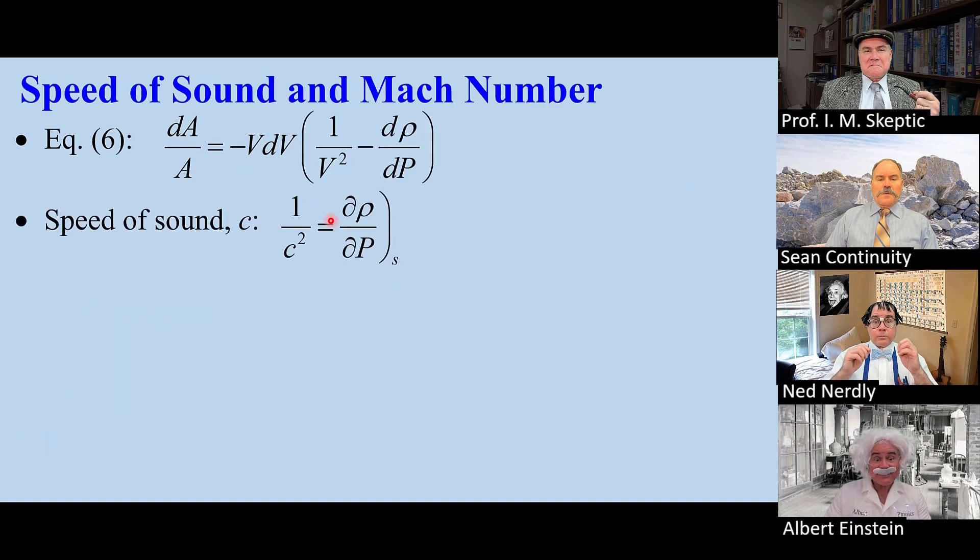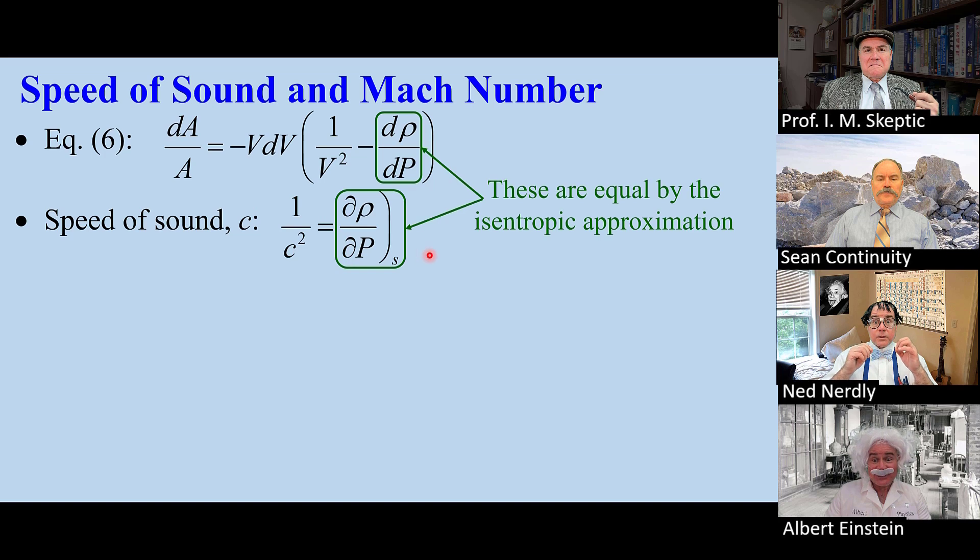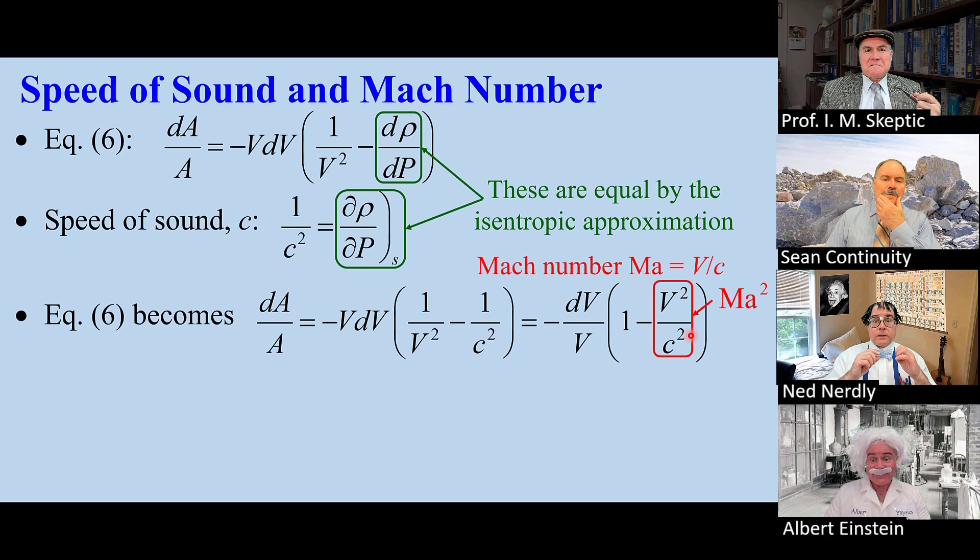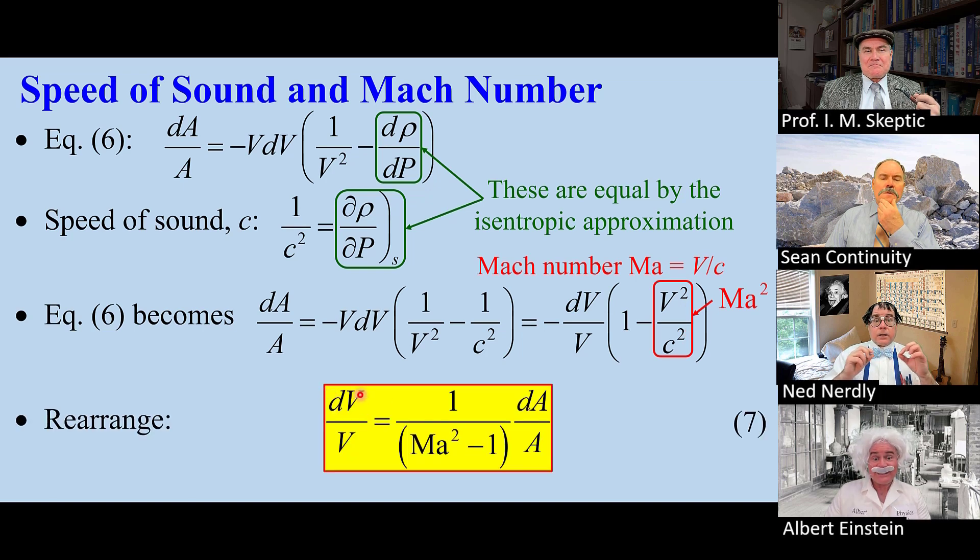Here it is again. We define the speed of sound. These two terms are the same since it is isentropic, so equation six simplifies. This ratio is the Mach number squared, so finally we get equation seven.